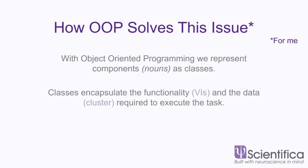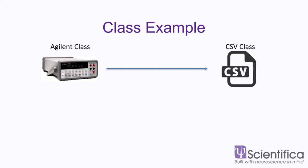Object-oriented programming solves this issue for me — it's not everyone's cup of tea. With the OOP mindset, we're going to be thinking about items and things as classes. A class is anything you know something about, and those classes can encapsulate the functionality and the resources required to execute that functionality. Let's look at this piece of code, for example, in a very abstract manner. We have an Agilent DMM which we want to collect data from and store it in a CSV file.